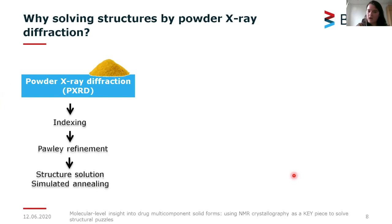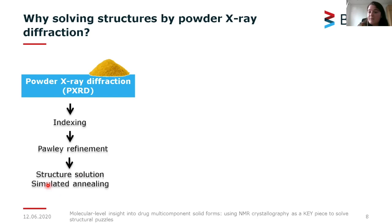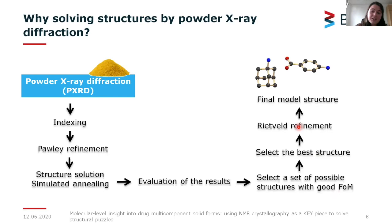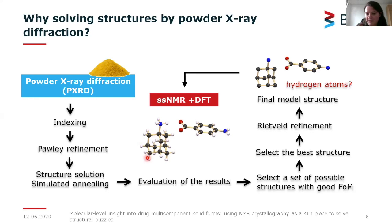Here is a step-by-step overview of the powder X-ray diffraction structure solution approach. We start with the indexation process, determining the space group and cell contents using programs such as TOPAS, DASH, or FOX. We then perform Rietveld refinement to verify that the cell parameters determined are correct. Next we proceed to structure solution using the simulated annealing algorithm, routinely implemented in DASH and FOX. We evaluate the results and select a set of possible structures based on a figure-of-merit statistical parameter that tells us how good the model is. We then select the best structure, refine positions, angles, and distance restraints using Rietveld refinement to obtain our final model. Hydrogen atom positions are then located using solid-state NMR and DFT.